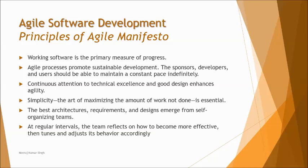Principle ten: the best architectures, requirements, and designs emerge from self-organizing teams — good communication between team members leads to great design, coordination, and the right product delivered to the client. Principle eleven: at regular intervals the team reflects on how to become more effective, then tunes and adjusts behavior accordingly. In agile's iterative incremental model, every iteration includes a retrospective to understand what went wrong and fine-tune the next iteration — unlike traditional approaches where this happens only after project completion.